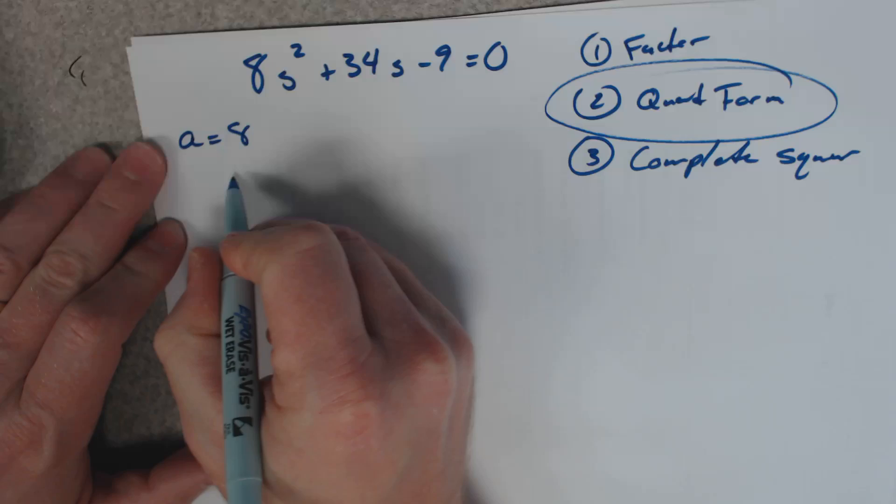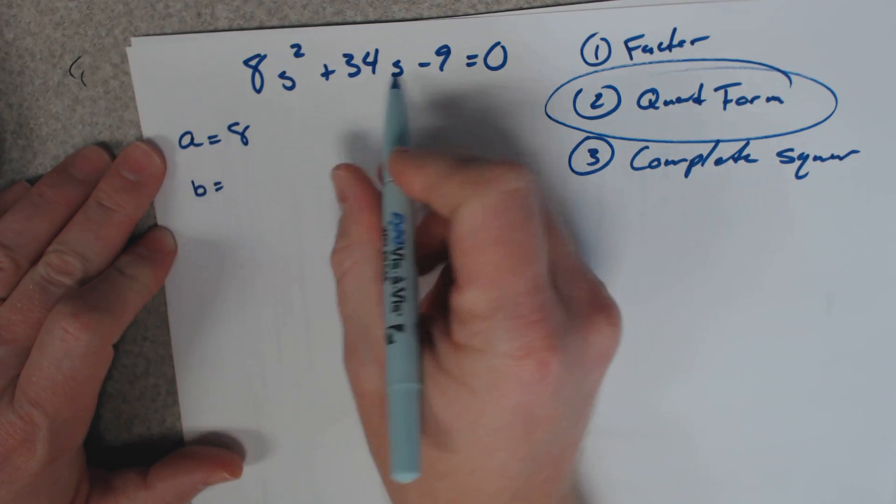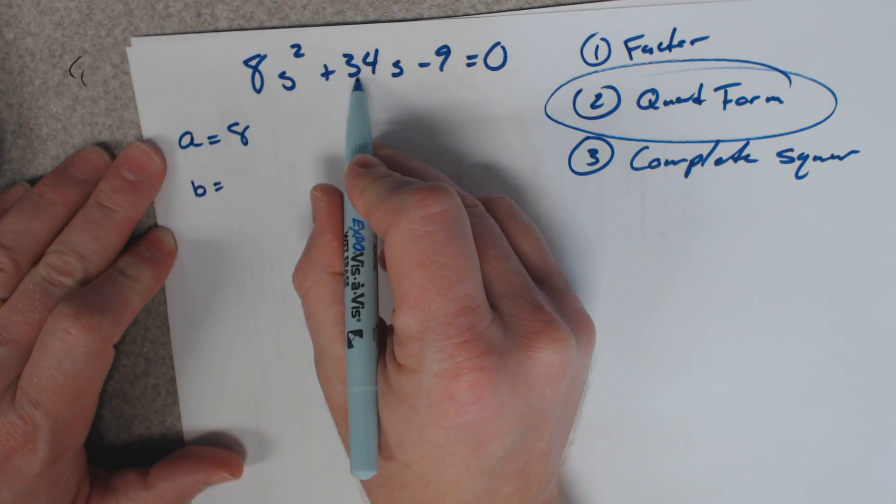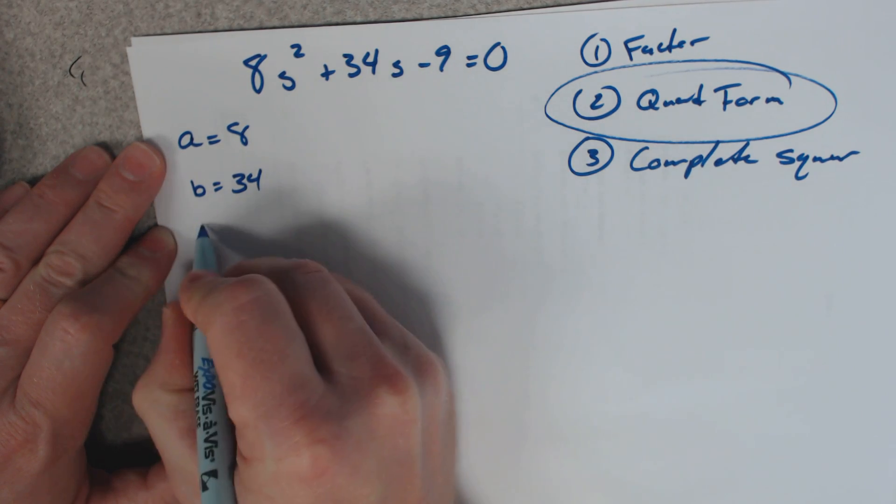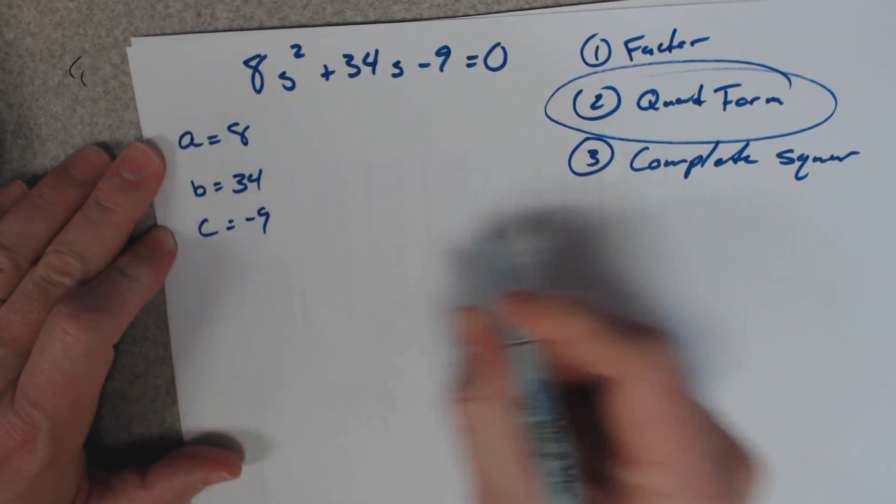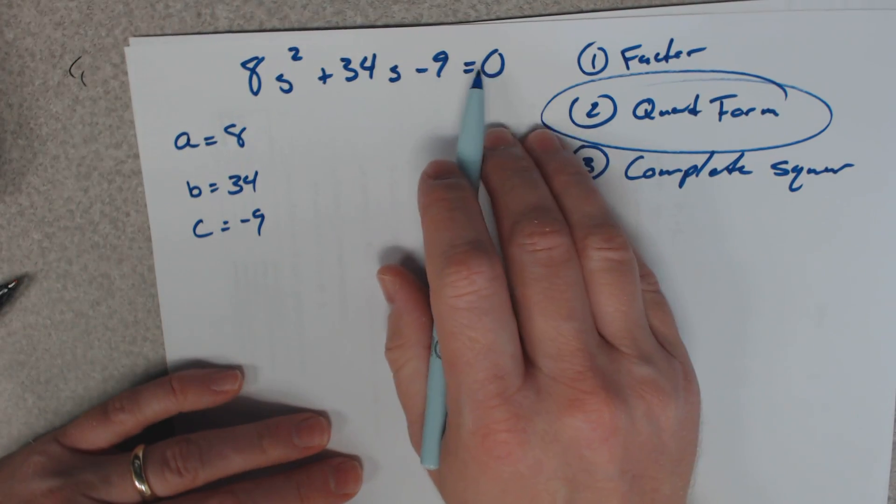So, your a value is 8. Your b value is always in front of the plane variable, which is 34 here. And then the c value is negative 9. And remember, it has to say equals 0.